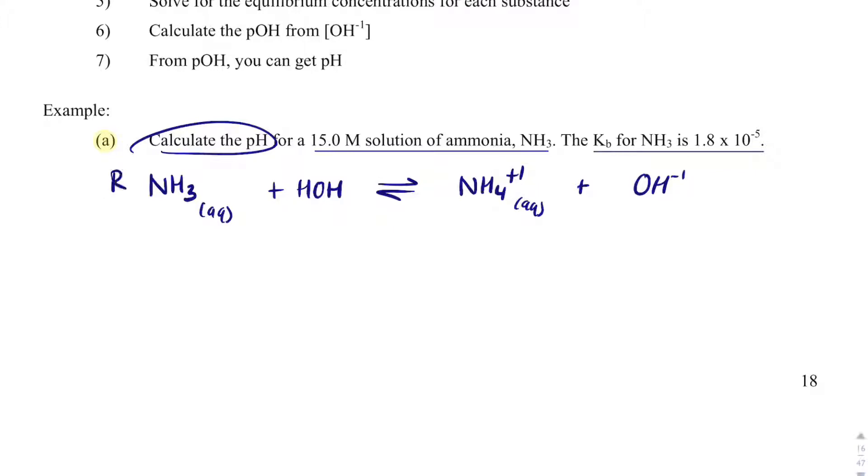And I'm going to set up a rice table. There's my reaction, my initial, my change in concentration, and then my equilibrium values. And water is a pure liquid, so I can just put an X there right away. Okay, and the ammonia is 15.0 molar. Ammonium, or NH4 plus 1, is 0, and hydroxide is 0. So we're going to shift to the right. So I end up with 15.0 minus X, X and X.